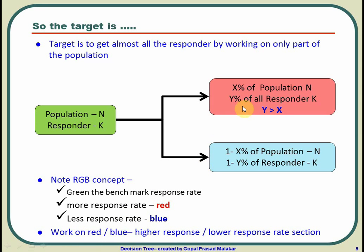You will typically work on the red segment — where you work on part of the population and get almost all the responders — or sometimes the blue side, depending on what you are trying to achieve. In decision tree modeling, the goal is to bifurcate the population in such a way that one part has a far higher response rate than another.